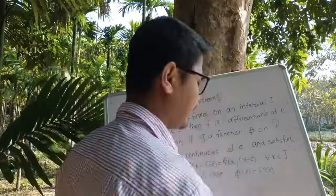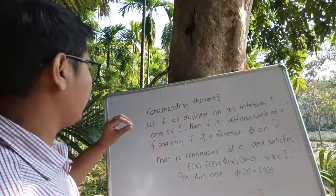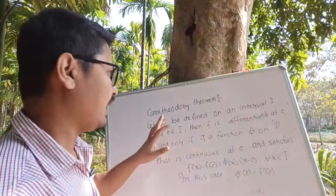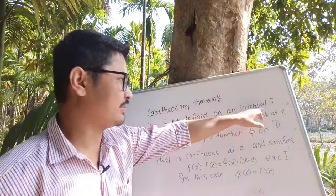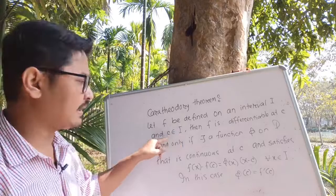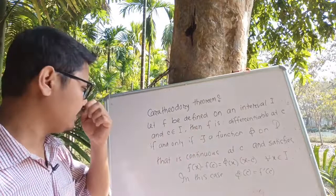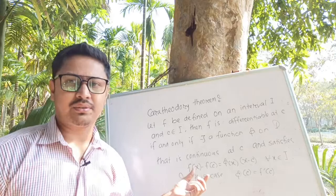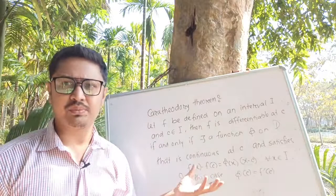So that is the statement of the theorem. Now we are going to prove this theorem. What this theorem says is: let f be a function defined on an interval I, and c belongs to the interval I — that is, c is an arbitrary point on interval I. Then f is differentiable at c. This theorem gives a condition for differentiability — a certain condition that a differentiable function must satisfy. It is stated as if and only if, so we will prove both cases.